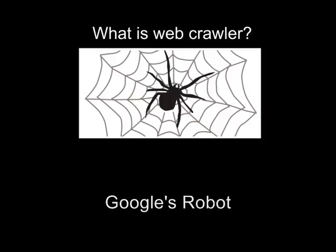Google's robot. It is described in some detail, but the reference is only about an early version of its architecture, which is based on Python. The tracker was integrated with the indexing process, text analysis, because it was made for full text indexing and also for URL extraction. There is a URL server that sends a list of URLs that have been obtained by various processes tracking.